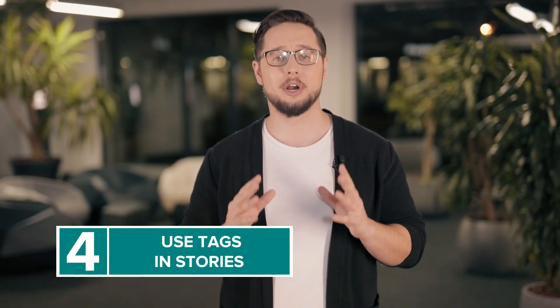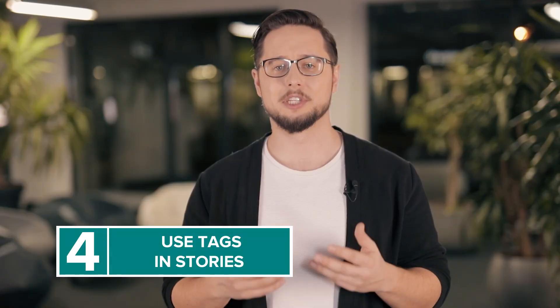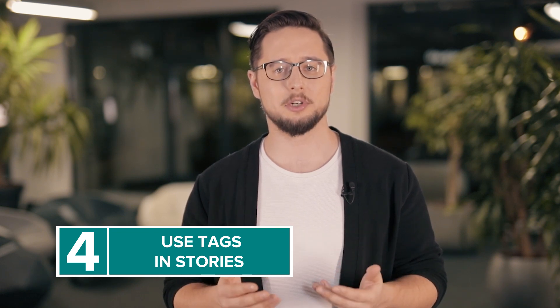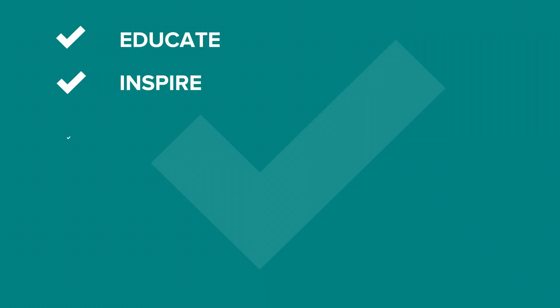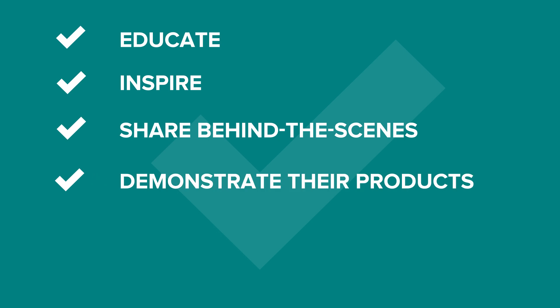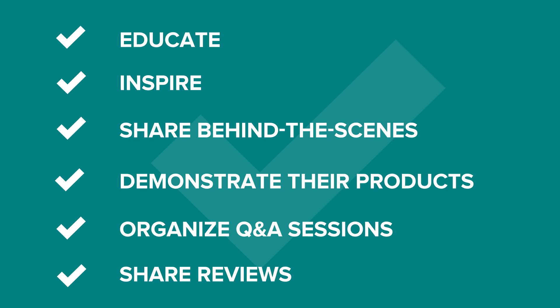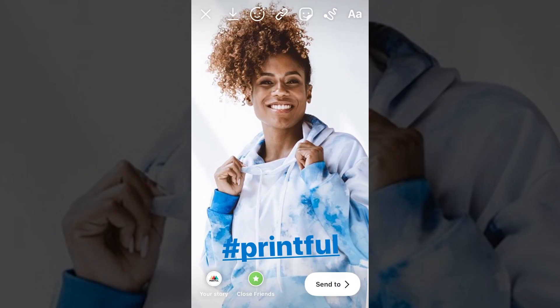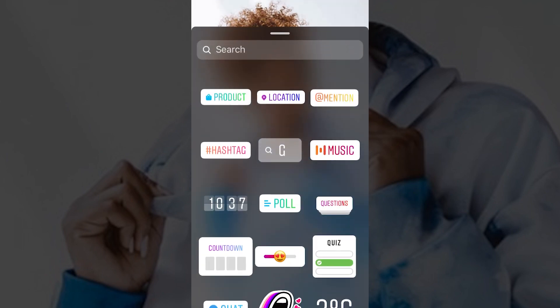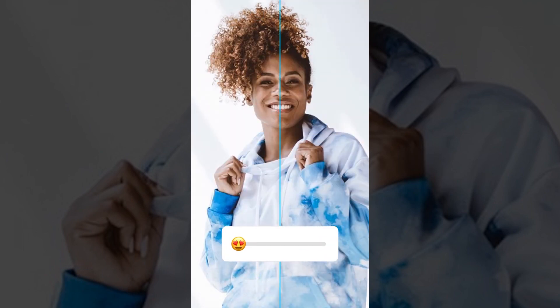Tip 4: Use hashtags in your Instagram stories. Whatever tags you decide to use, Instagram will add your stories to the hashtag search for 24 hours. People use stories to educate, inspire, share behind the scenes of a business or event, demonstrate products or services, organize Q&A sessions, and share feedback and reviews. Introduce yourself or your business and show what's behind it — the more stories you add, the more engagement you receive. When adding hashtags on top of your stories content, make them small so they don't divert attention from your post. You can even shrink your hashtags or hide them behind an emoji, sticker, or GIF. Remember you can add up to 10 hashtags on a story, but take care not to clutter your content.